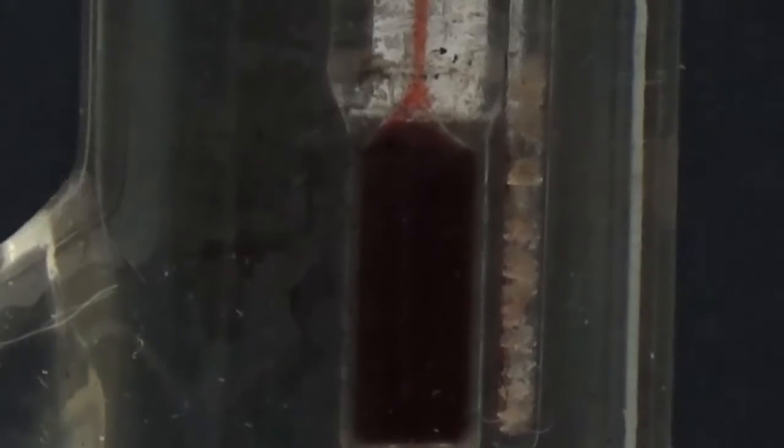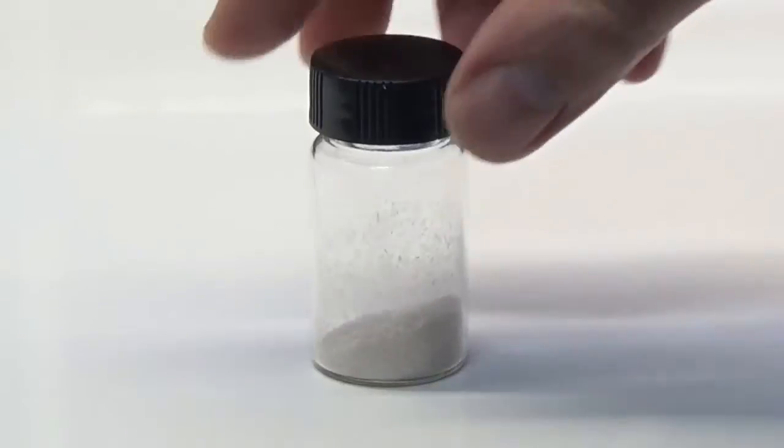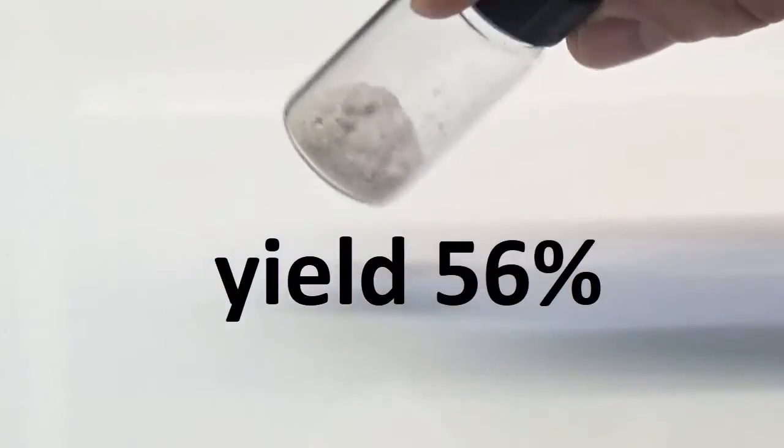If the melting point is lower than 150 degrees it is convenient to recrystallize to purify. This melting point indicates contamination by phenacetin which has a melting point of 133 degrees. The yield of this synthesis was 56%.